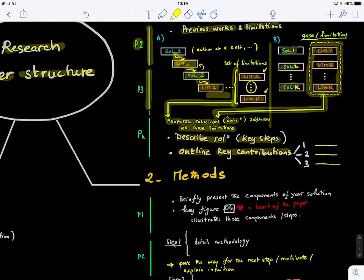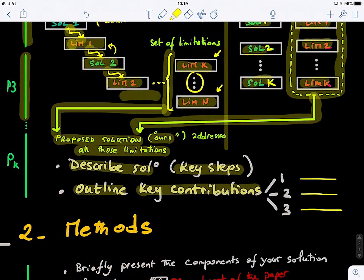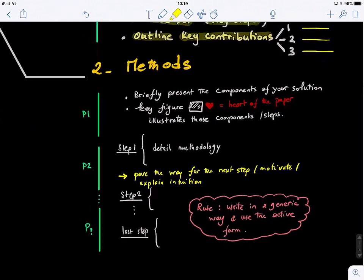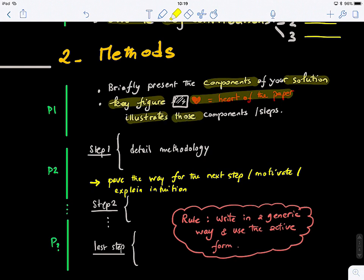Now let's look at the methods section. After reading the introduction, the reader wants to learn about the proposed solution. In the first paragraph of the method section, you briefly present the components of your solution or proposed method. You can also link to your key figure — I always call it the heart of the paper — because you want your figure to be catchy, comprehensive, and very clear, explaining all the steps of your proposed solution. In the first paragraph, you say here's what we propose, Figure 1 shows the different steps, and give a broad overview.